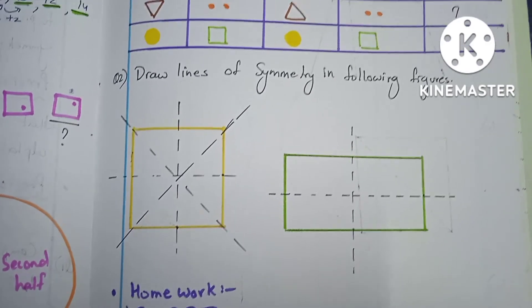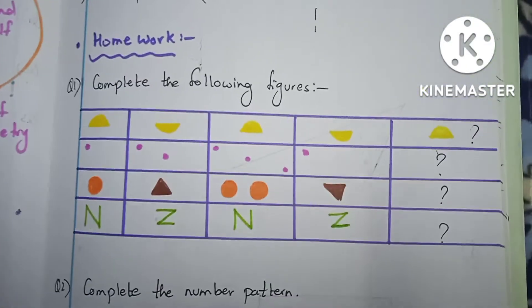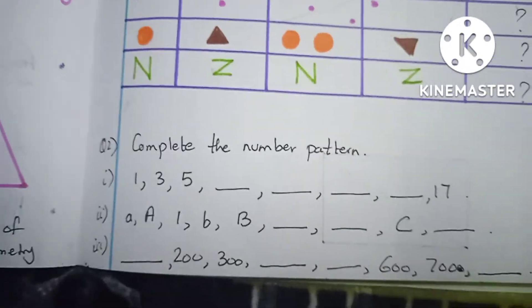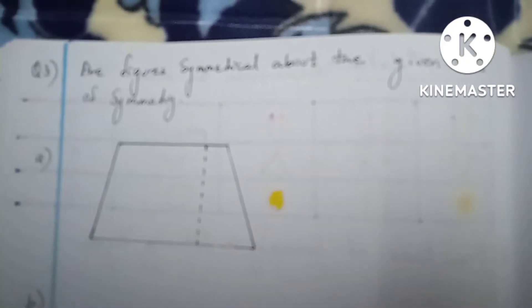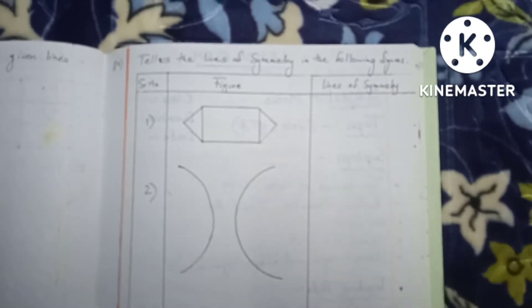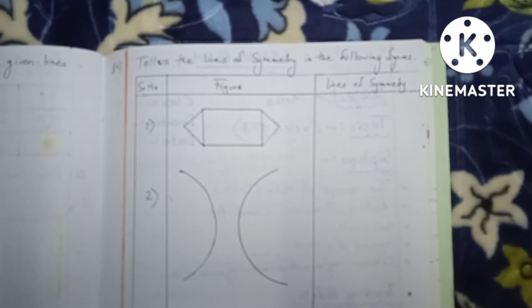As homework, we have given patterns of objects, patterns of mathematics and alphabets. We have also given problems where students have to find out whether an object is symmetric about a given line, and similarly find the line of symmetry of particular objects.